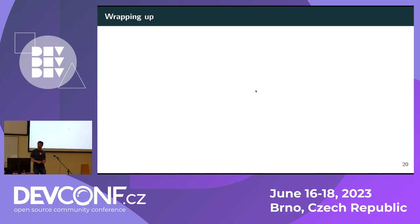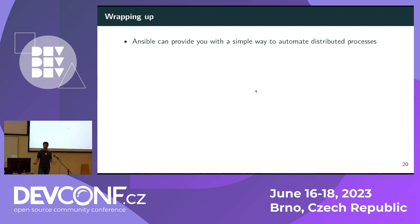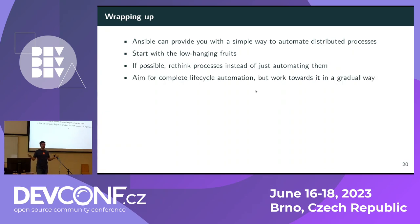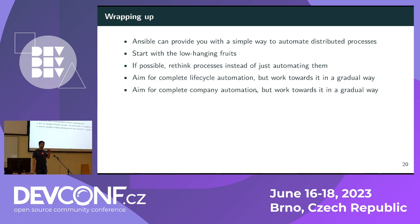Wrapping up: Ansible can provide a simple way to automate distributed processes if that is your stage of automation. Start with some low-hanging fruit and then build on top of that. If possible, rethink processes — don't try to automate whatever process someone tells you is the way things are done. Try to understand what exactly they are trying to achieve, then create a good process to achieve that result. Aim for complete lifecycle automation but work toward it over time — don't rush it. And try to work toward complete company-wide automation of all processes within your organization, but again, don't rush it — it's an over-time process.